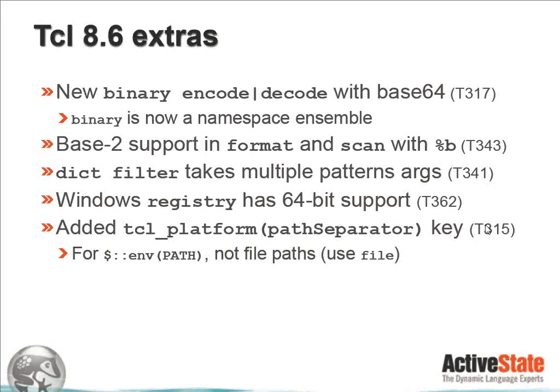There is also base2 support in the format and scan commands with %b. So if you're getting something in 0s and 1s, you can now much more easily scan or format in that format. The dictfilter command has been enhanced to take multiple pattern arguments, just a simplification for dictfilter users. The Windows registry extension has been extended to have 64-bit support, which is very important with the widespread use of Windows 64, as there are both separate 32 and 64-bit sets of the registry for different program application sets, and now you have full access to this in Tcl.